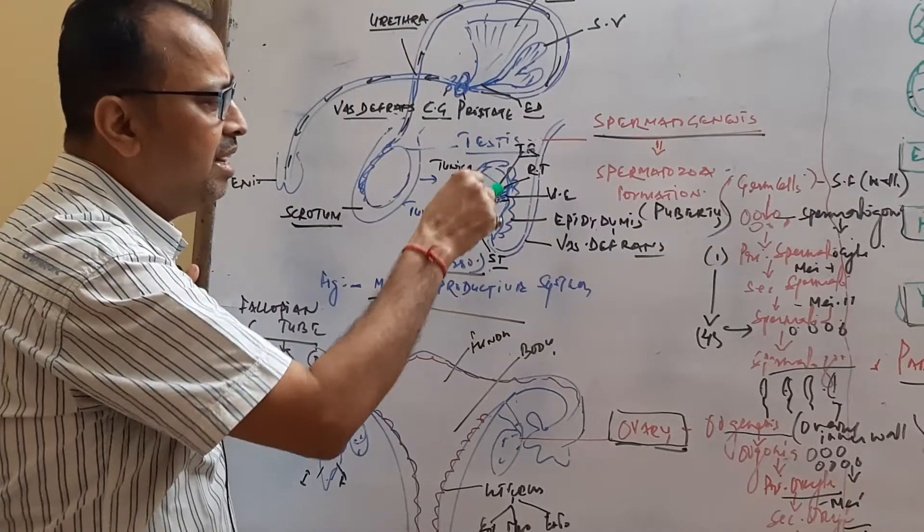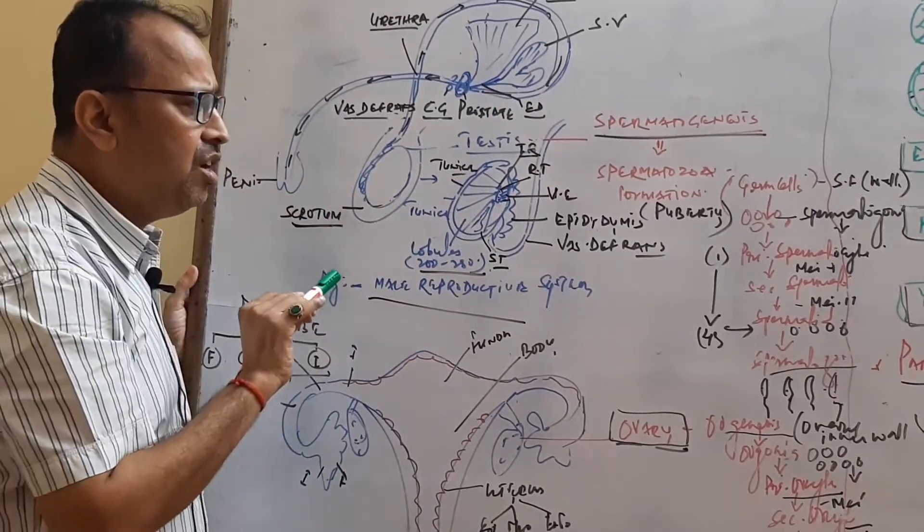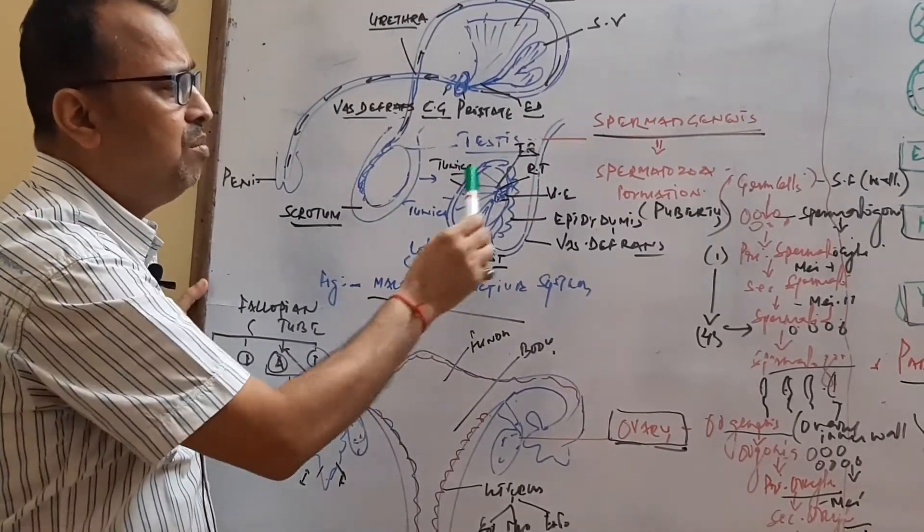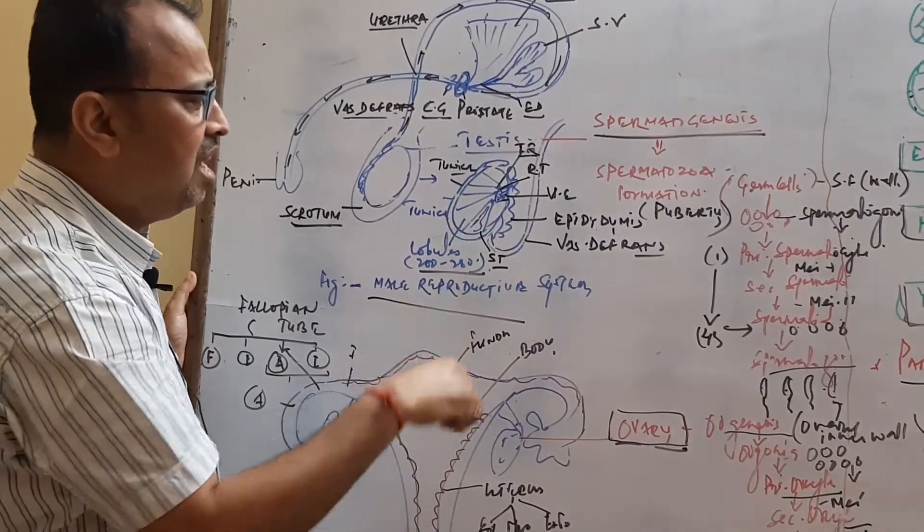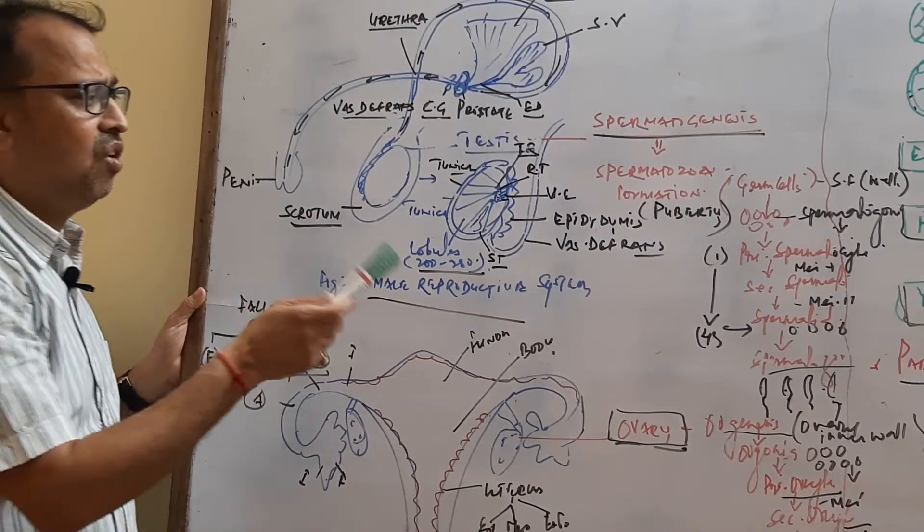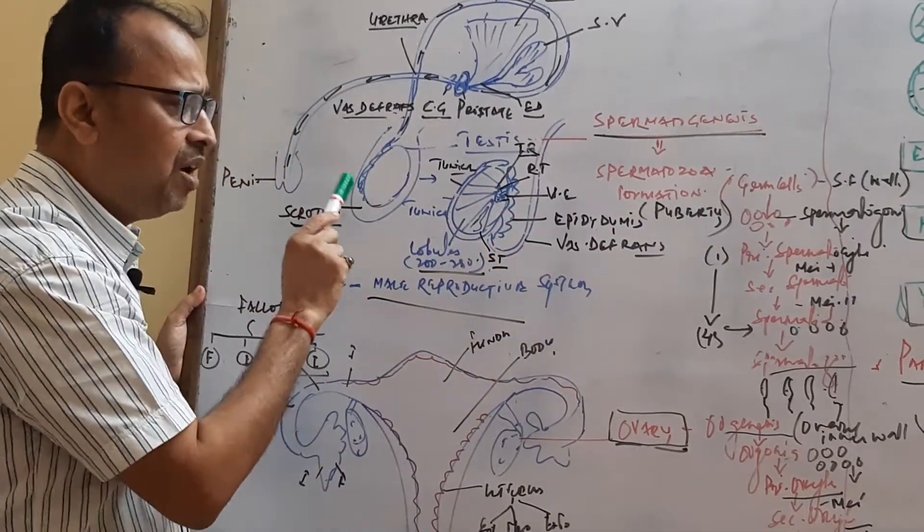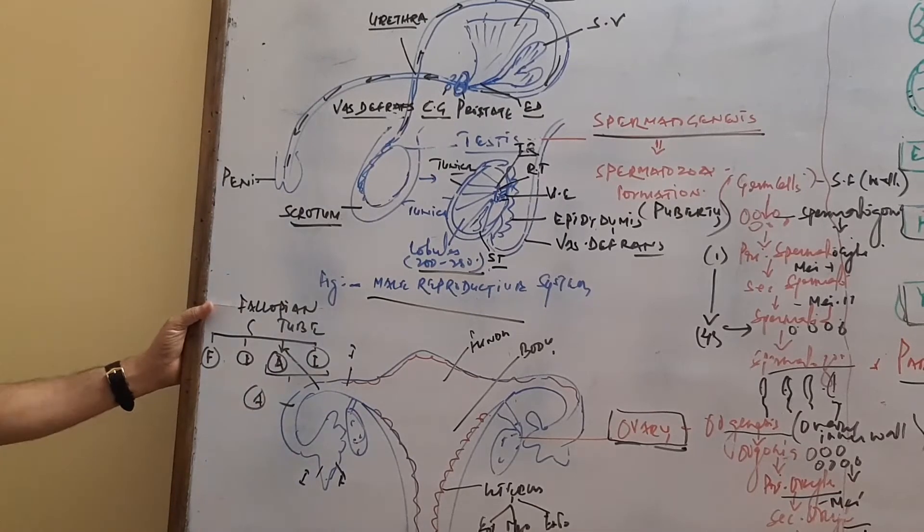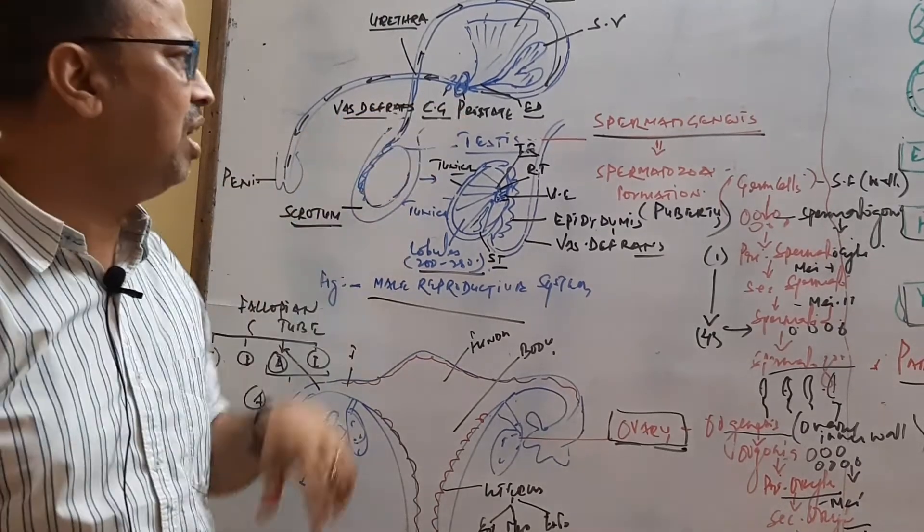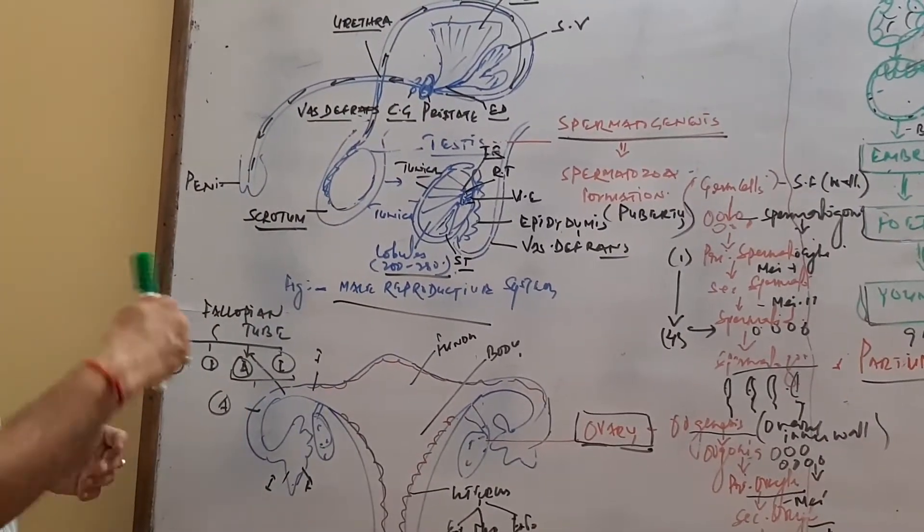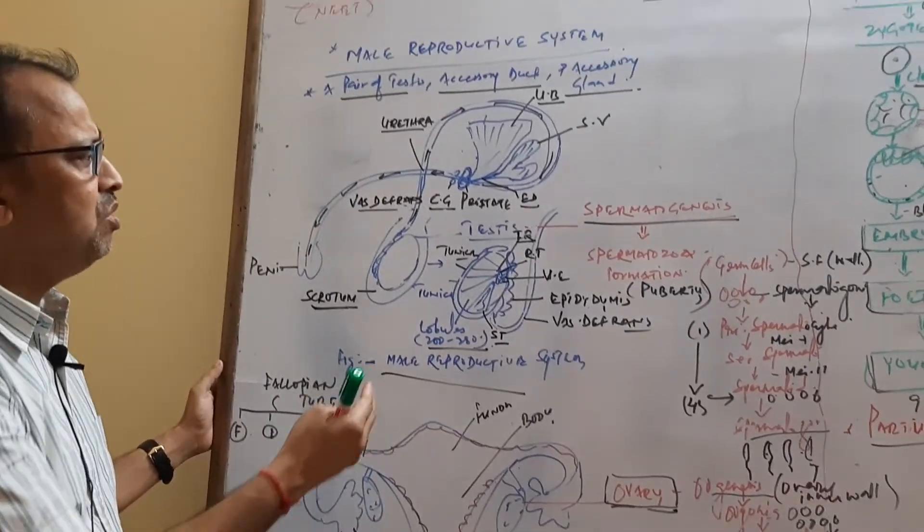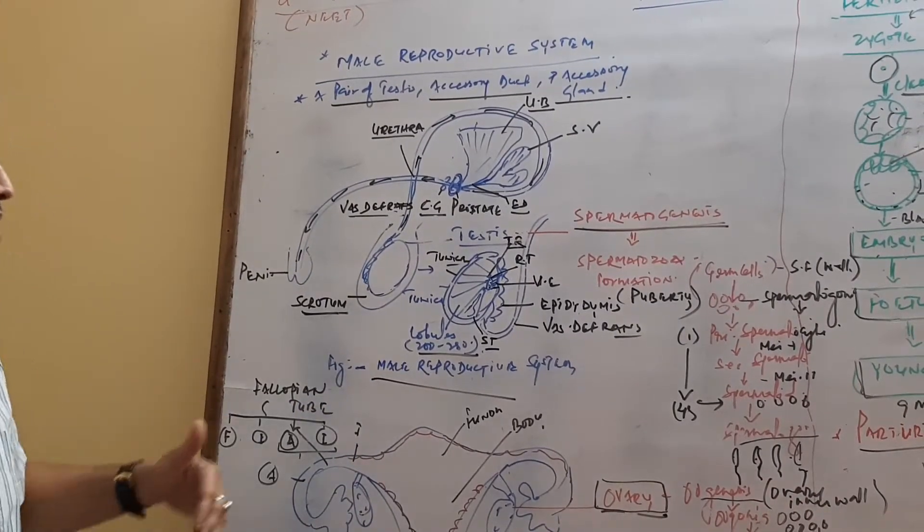Seminiferous tubules get out and become a straight tubule called tubuli recti, and all seminiferous tubules open into rete testis. It emerges outside to vasa efferentia and forms a highly coiled structure along one corner of the testis called the epididymis, which is differentiated into caput, corpus, and cauda epididymis. It leads to form a straight duct called vas deferens, and then vas deferens connects to the ejaculatory duct and finally leads to the urethra along with spermatozoa and fluid to form semen.